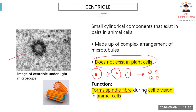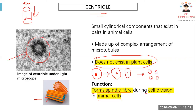This is an image of a centriole. The centriole is a cylindrical shape. If you look at it straight downwards it looks like a ring structure, but if you look at it sideways it looks like one strand of fibers. The function of the centriole is to form spindle fibers during cell division in animal cells, and it does not exist in plant cells.